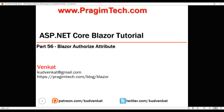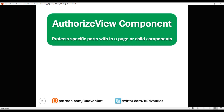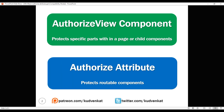This is part 56 of the Blazor tutorial. In our previous video, we discussed the authorize view component. This component is used to authorize the display of specific parts within a page, including child components. We use the authorize attribute to protect routable components, that is components with the @page directive.